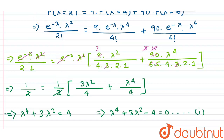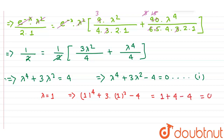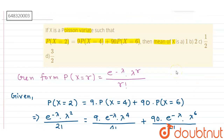The value of lambda is given as 1. At λ=1, we verify: 1⁴ + 3×1² − 4 = 1 + 3 − 4 = 0. So the equation is satisfied, giving us λ=1. Since the mean of a Poisson variate equals lambda, the mean of X is 1, which corresponds to option A.